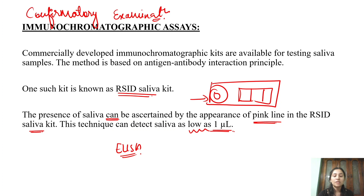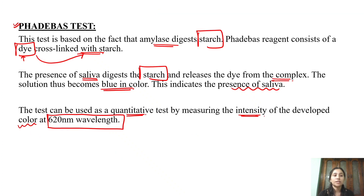For confirmatory examination of saliva, you can use the RNA-based kit, immunochromatographic assays such as the RSID Saliva Kit, or ELISA. All of these methods are available for confirming the presence of saliva in forensic samples.